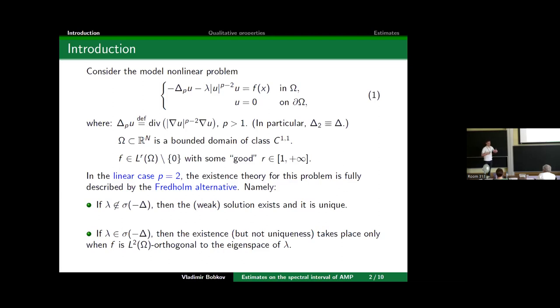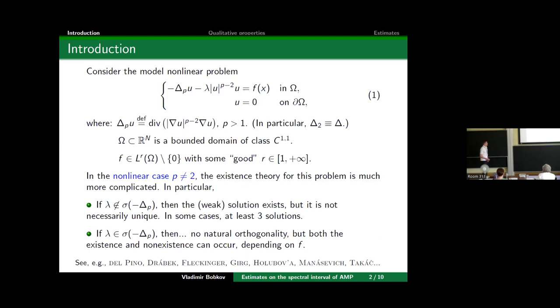In the nonlinear case, the story is much more different and much more difficult than in the linear case. For instance, if λ is not an eigenvalue, then a weak solution exists, but uniqueness is already lost in general. There are cases when one can find at least three solutions depending on f, maybe more. And if λ is an eigenvalue, then the story is even harder because we don't have the Palais-Smale condition or compactness and no natural orthogonality, so the business becomes more involved.